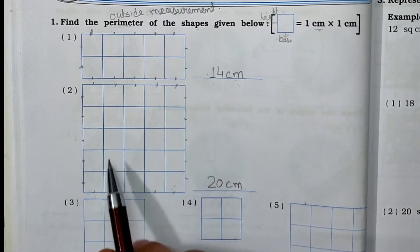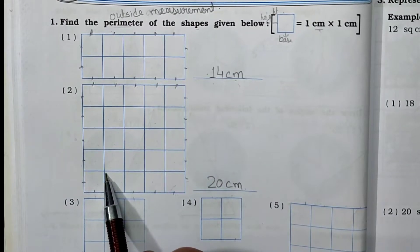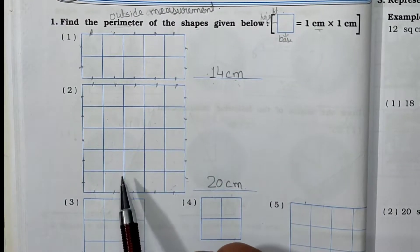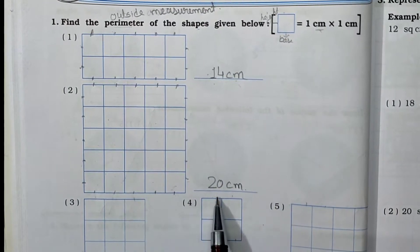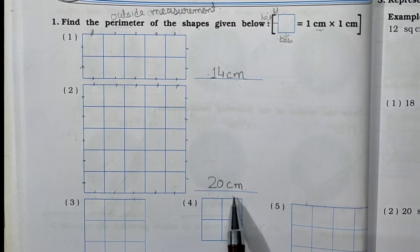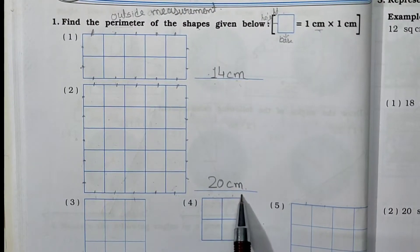So the perimeter of this shape is 20 centimeters. Write down here 20 centimeters.